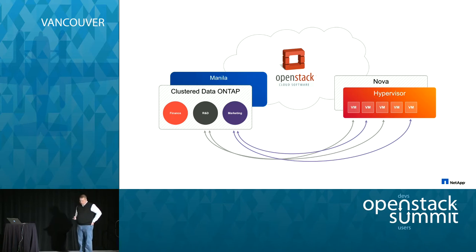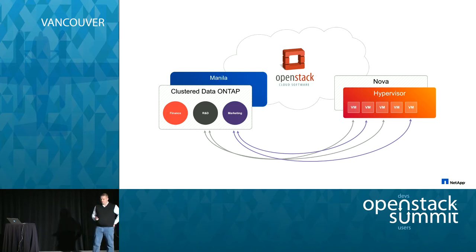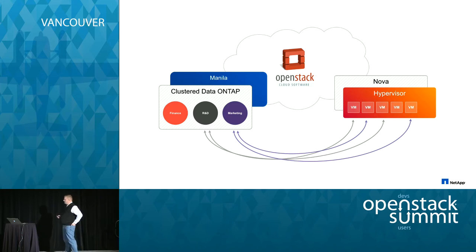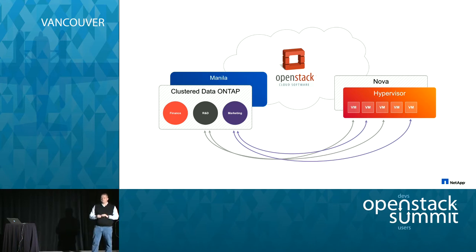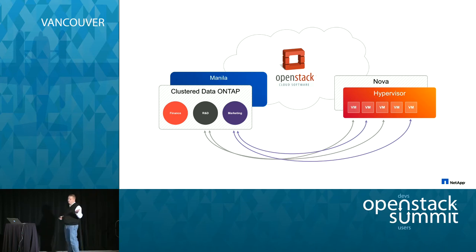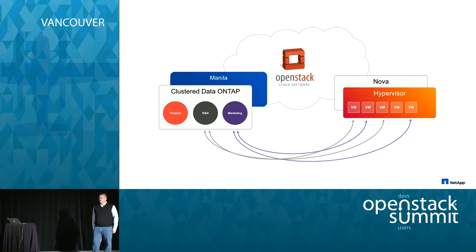Interestingly, Amazon has launched a capability called EFS — Elastic File Storage — in approximately the last month. That's essentially Manila for Amazon, and it follows the evolution of Manila. I'm not suggesting they're using Manila, but it's the same construct and fills the same set of gaps. Perhaps the first instance of Amazon starting to actually follow OpenStack instead of the other way around.